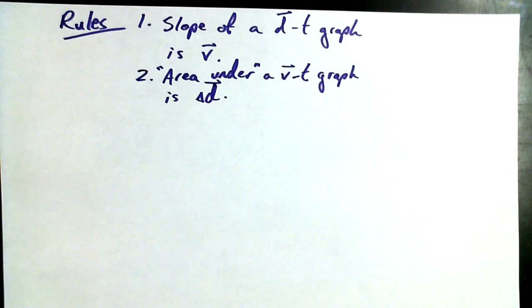So just by way of recap, two major rules we've done so far. Slope of a DT graph is velocity, and the area, quote-unquote, under a VT graph is displacement. So I want to deal with those.